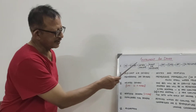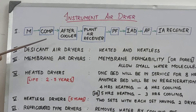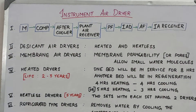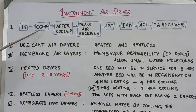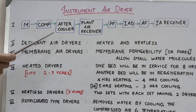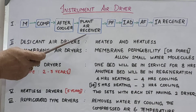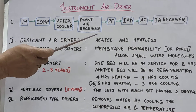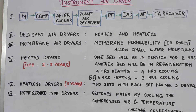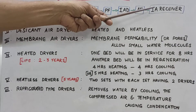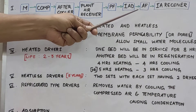In this episode we can see the instrument air dryer system. This is a simple block diagram of the air compressor instrument air system. It includes the motor, the compressor and intercoolers, then the aftercooler, then the plant air receiver, then the pre-filter, the instrument air dryer, the after filter, and finally the instrument air receiver. This is a normal block diagram of an instrument air system.